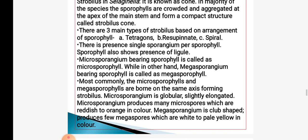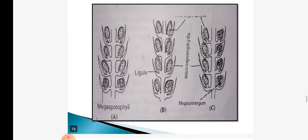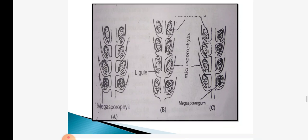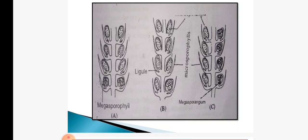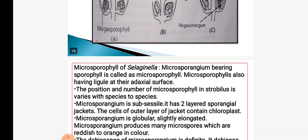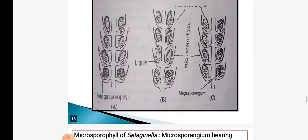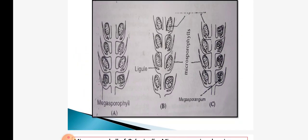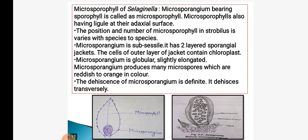Microsporangium is globular and elongated with many reddish or orange colored microspores; megasporangium is a club-shaped structure with few megaspores, which are white or pale yellow in color. This figure shows the structure of megasporophyll, microsporophyll, microsporangium, megasporangium, ligule, microspores and megaspores. In the LS of strobilus, these sporophylls are present.